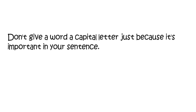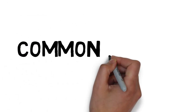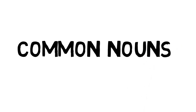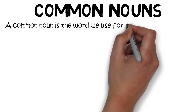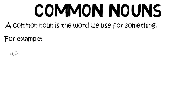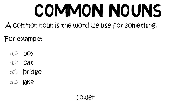There's a ruling for when nouns get capital letters. So let's start by looking at common nouns. A common noun is the word we use for something — so a boy, for example, a cat, a bridge, a lake. It's just the word we use, and these are all written in lowercase.